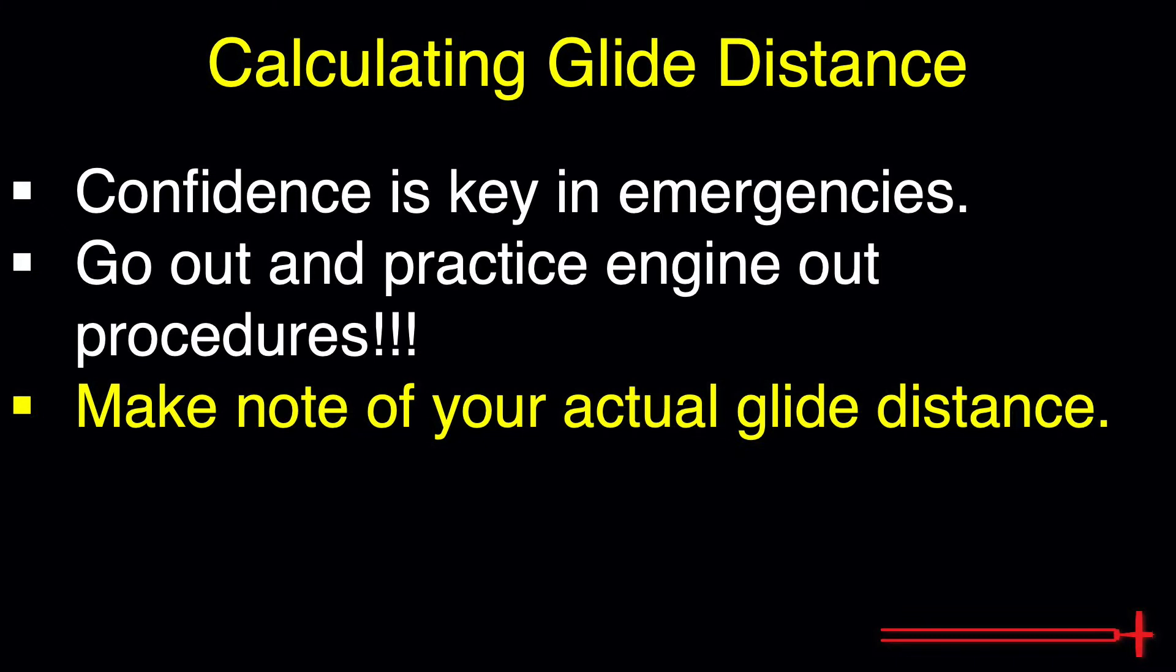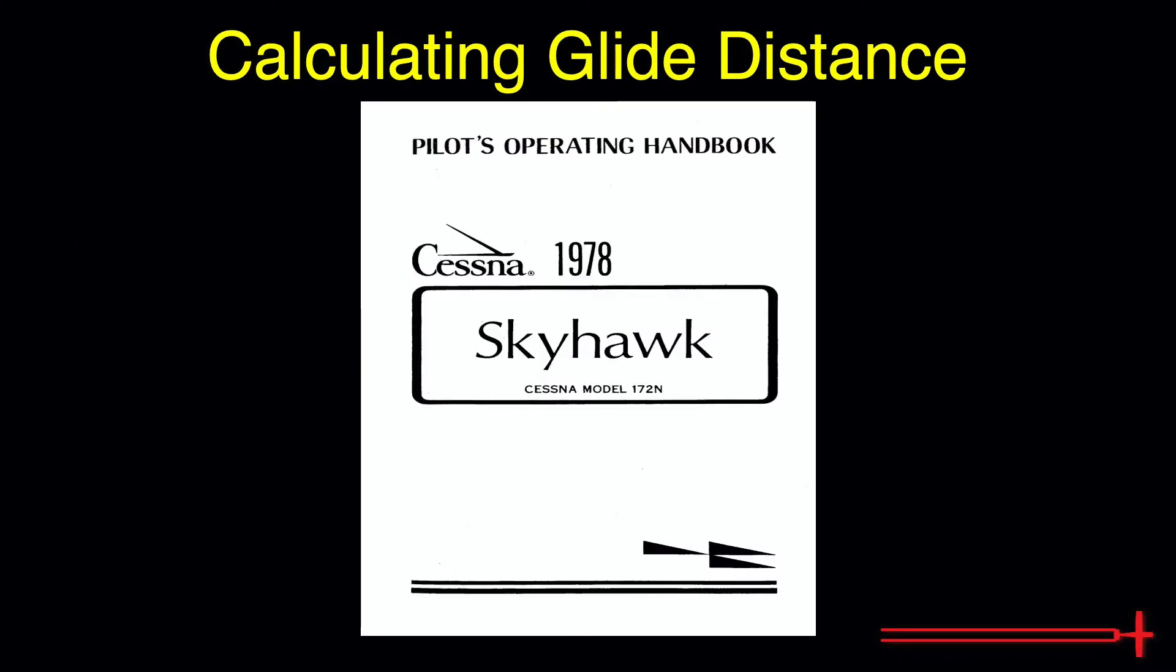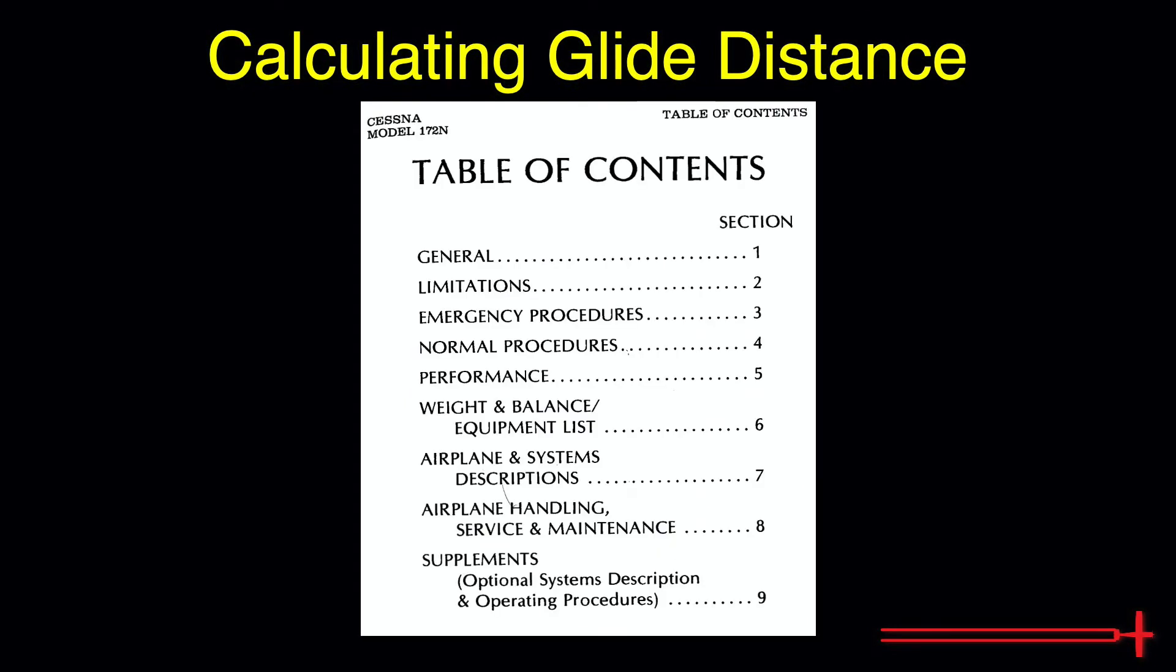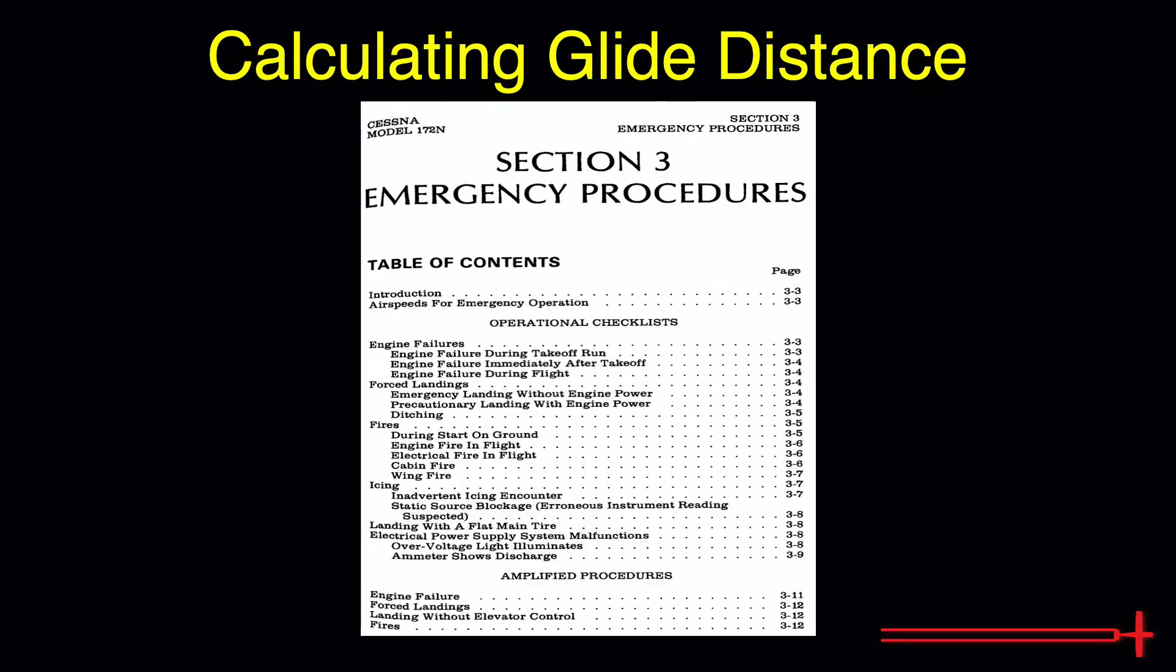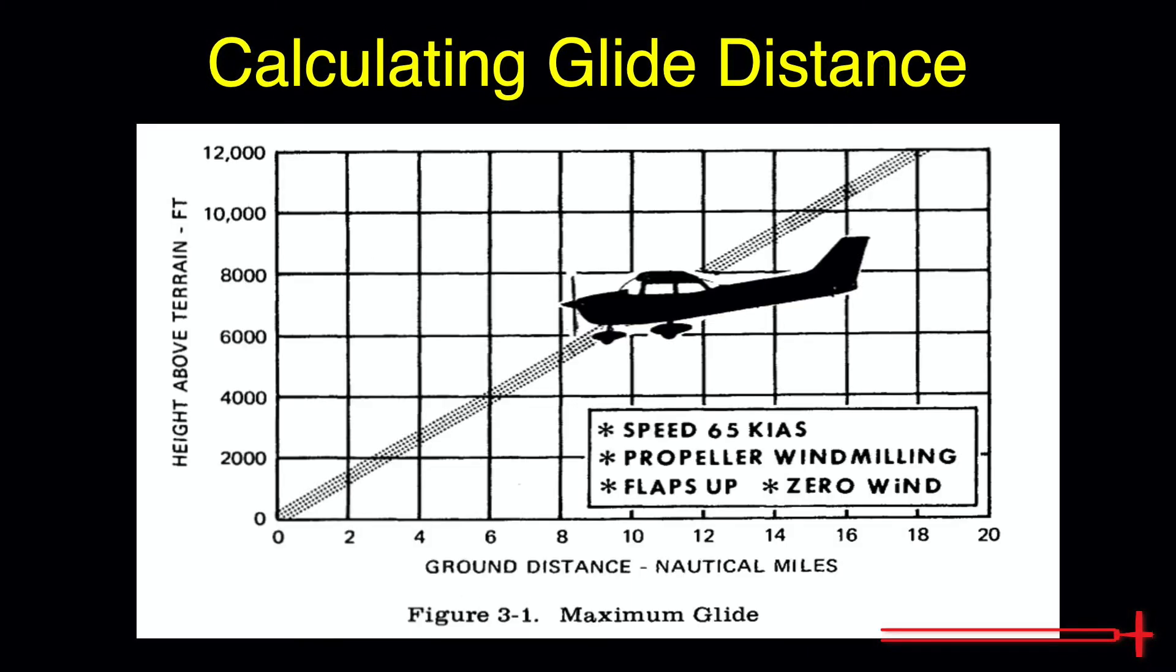We can find all the information we need for today in the POH. Open up to the Table of Contents, and the glide ratio for this Cessna is hiding out in Chapter 3, Emergency Procedures. Glide information can be found in the Engine Failure section. There is a simple little chart that we can use to determine our glide ratio. Glide ratio is simply the horizontal distance we will travel for every 1,000 feet we descend. We can say that an aircraft expected to glide 2.2 nautical miles for every 1,000 feet descent has a glide ratio of 2.2 for instance.